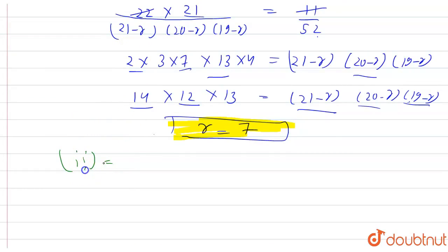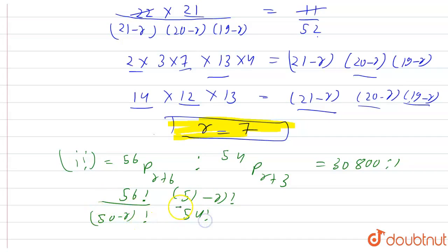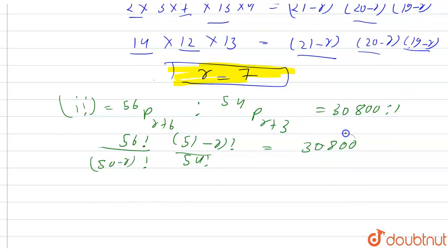For this we have 56 PR plus 6 raise to 54 PR plus 3 is equal to 30,800 raise to 1. On solving this equation, we will get 56 factorial into 51 minus R factorial divided by 50 minus R factorial into 54 factorial is equal to 30,800.